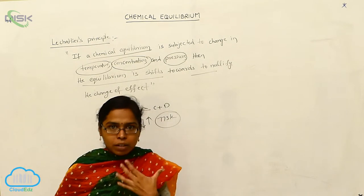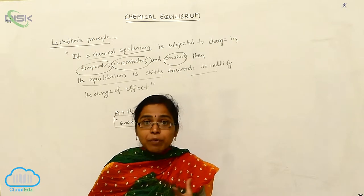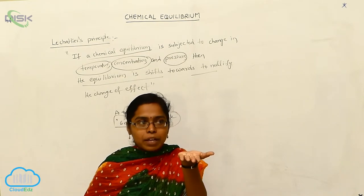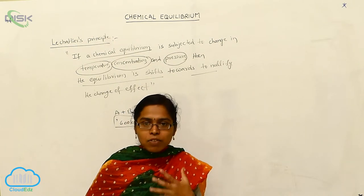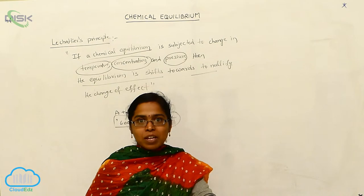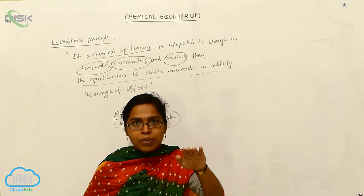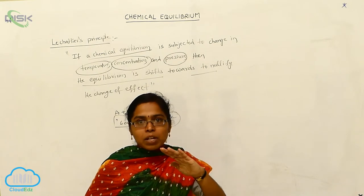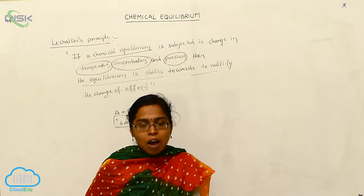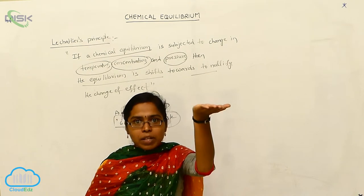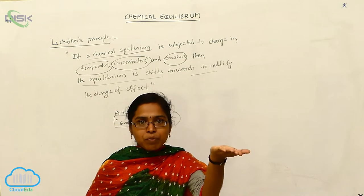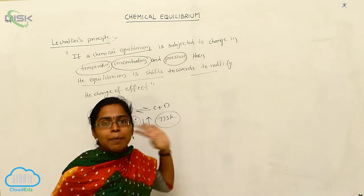For example, I will explain with human beings. Whenever we are attacked by viral fever, our body temperature increases. Whenever the temperature increases, all the metabolic reactions in our body also totally change. But our body compulsory needs to decrease our temperature — to recover to what it was before the fever. Our body is first of all present in equilibrium. Whenever the viral attack occurs, the temperature increases, and our body always tries to decrease it back to normal. Like that, chemical equilibrium is also the same.